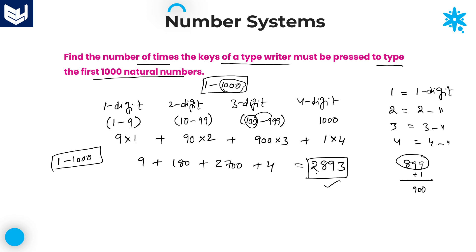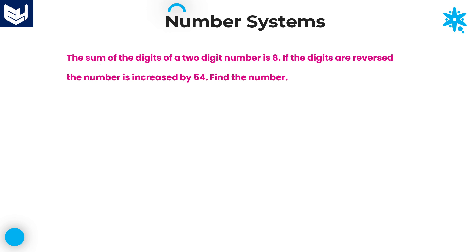I hope you understand. Next question — the last question in this session. The sum of the digits of a 2-digit number is 8. Here, we are talking about a 2-digit number. Let us take that 2-digit number as x, y. Since we don't know that particular 2-digit number, we write x plus y is equal to 8.